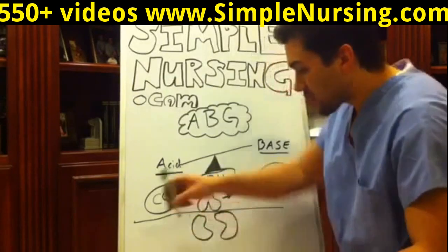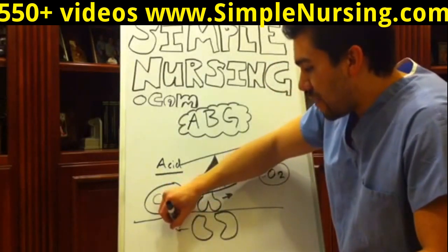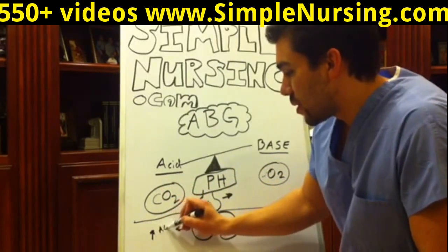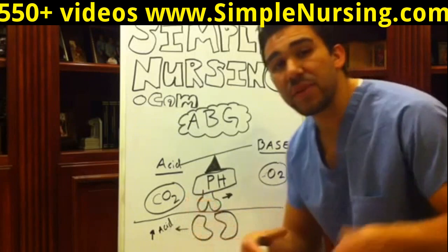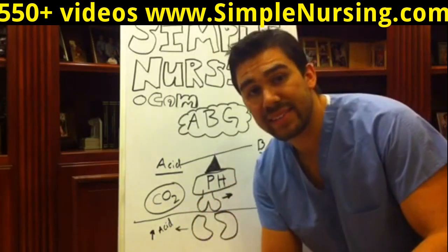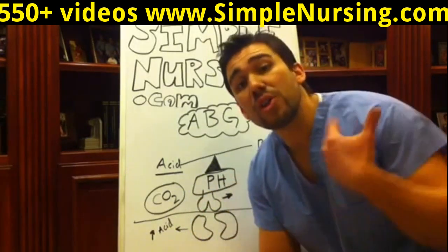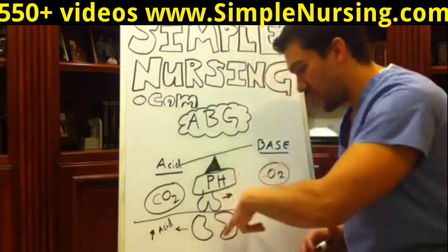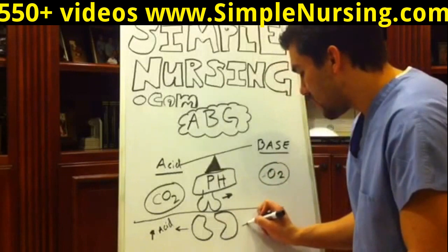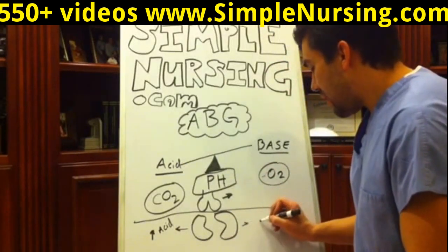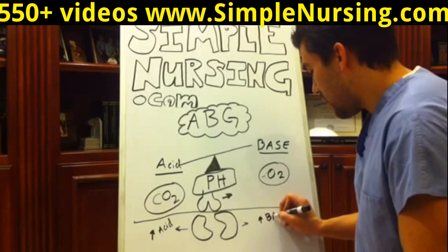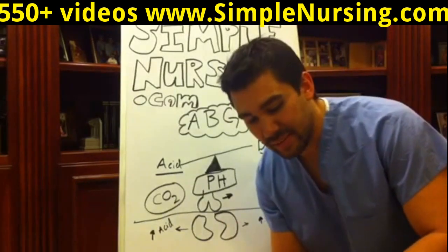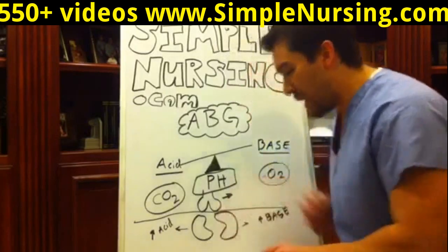With your kidneys: if you have an increase in acid, or basically if you get rid of all of your base, you're going to be in an acidotic state. With your kidneys as well, if you get rid of all of your acid, you'll be in a basic state.